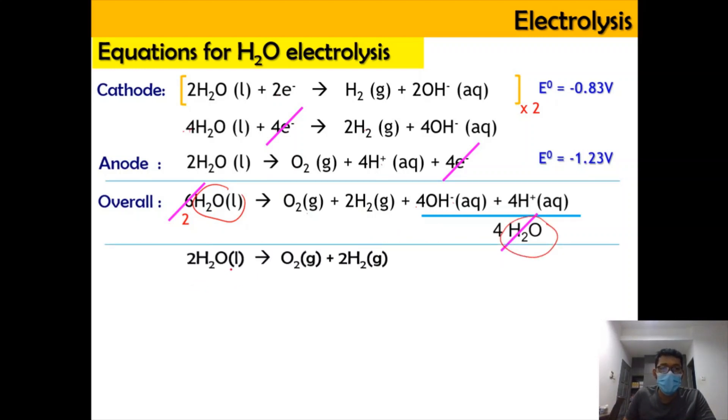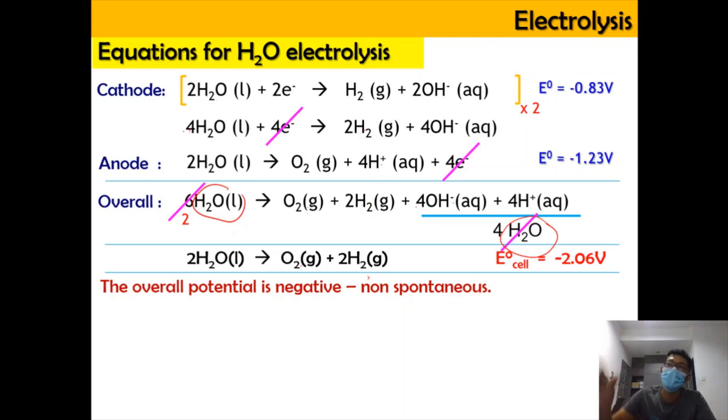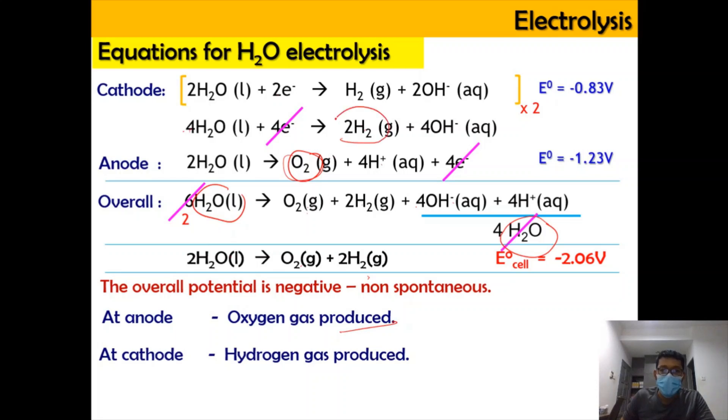4OH- ion and 4H+ ion can combine together to form water. And this water here can be cancelled out with the reactant part so that 6 minus 4 will have 2H2O. What's left is 2H2O(l) → O2(g) + 2H2(g). This is the cell potential where -0.83V plus -1.23V will get -2.06V. We can say that the overall potential is negative which means that it is a non-spontaneous reaction and that is why we need battery in order to initiate the chemical reaction. For the observation at anode, oxygen gas is being given out. Meanwhile, at cathode, hydrogen gas is produced. The ratio here is 1 mol of oxygen gas and 2 mol of hydrogen gas.